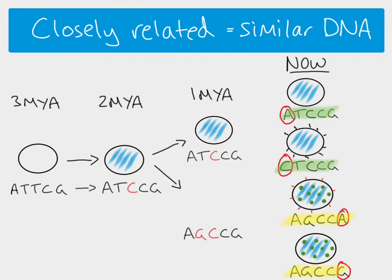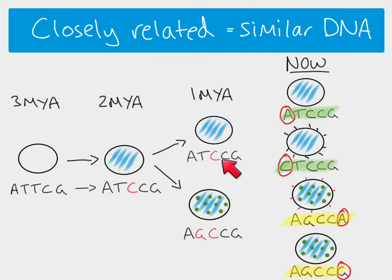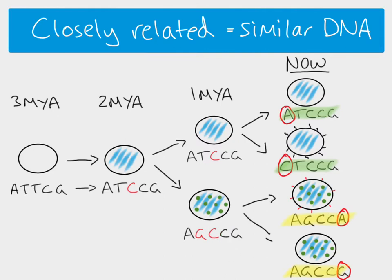We've now got two species which are closely related — they share a very recent common ancestor. Their DNA sequences differ slightly but are very similar because they only separated a million years ago. Then at some point between a million years ago and now, further speciation events occurred: this species speciated into two species we see today, and likewise this other species speciated into two species we see today.